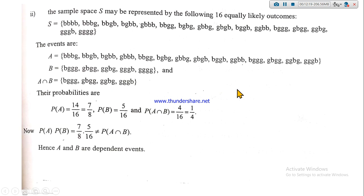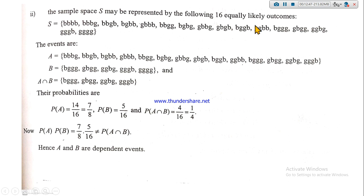For part two with four children, the sample space has 2⁴ = 16 equally likely outcomes. Start with four boys, introduce one girl and shuffle, then two girls in all combinations, then three girls, then four girls — giving 16 entries total.